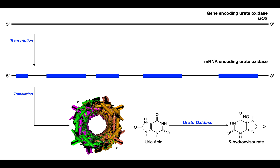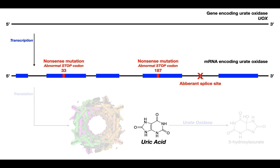This process does not occur in humans, and there are three major reasons. Number one: somewhere in the introns there is an aberrant splice site. During normal mRNA processing and maturation, introns must be spliced out — if they're not, the mRNA is never going to be translated into a functional protein. Number two and three are nonsense mutations that occur at codons 33 and 187 in the UOX gene, which means those mutations will be present in the mRNA.